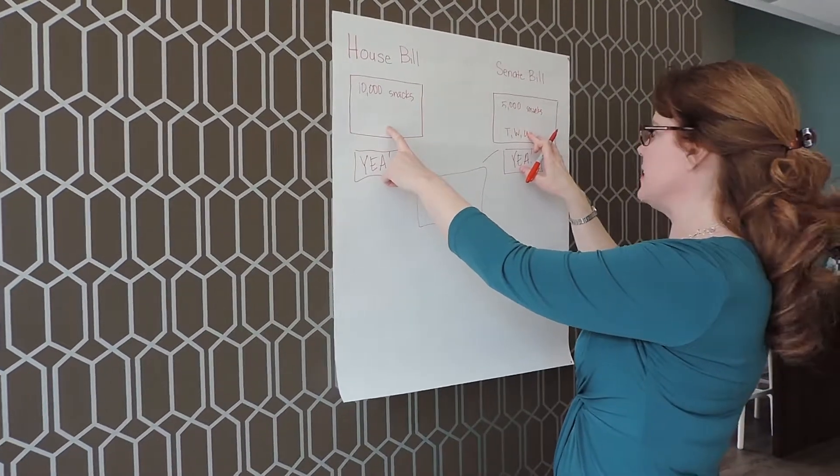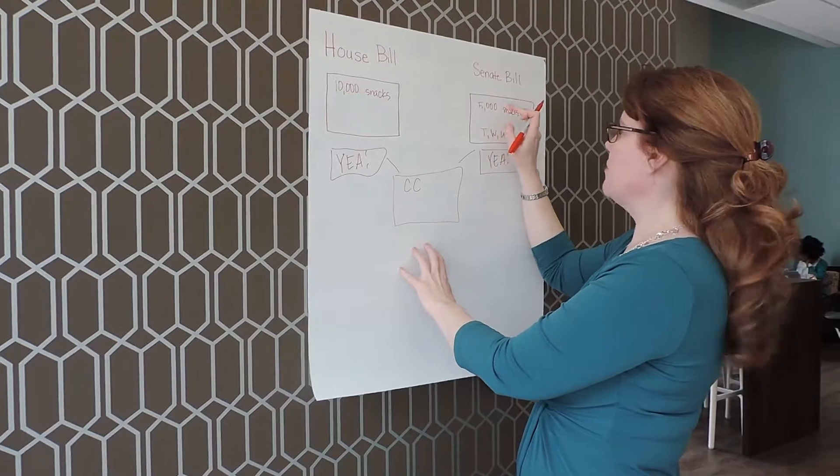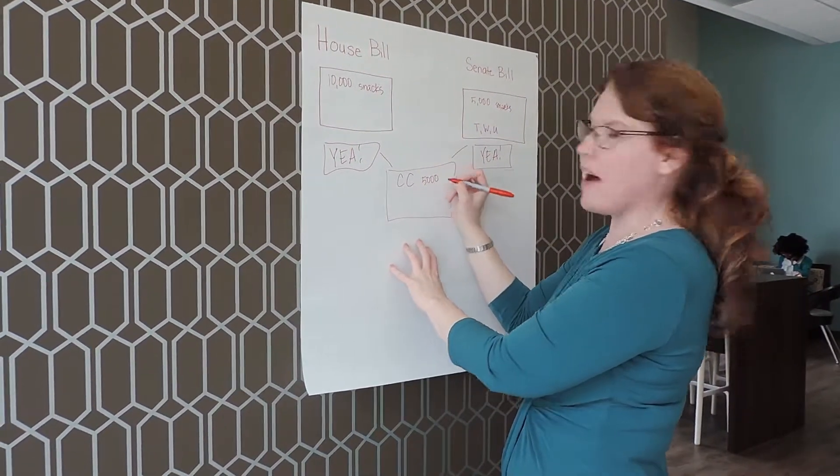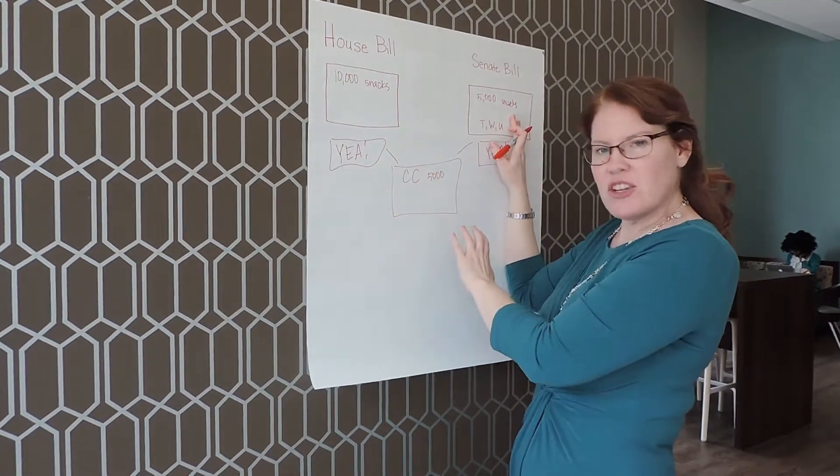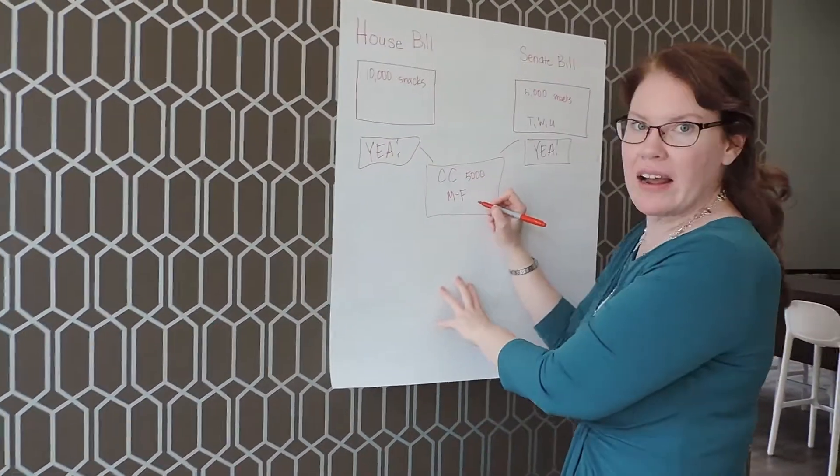So let's say in this instance, the House caves on the price. So let's say they agree to only spend $5,000 on snacks. But the Senate gives up, they give a concession, they give up what days of the week so you can spend money on snacks Monday through Friday.